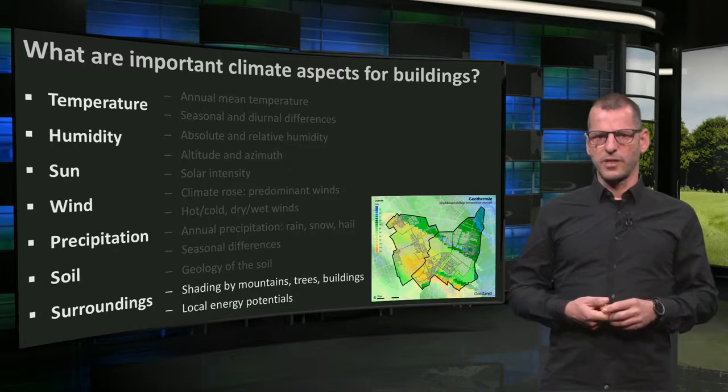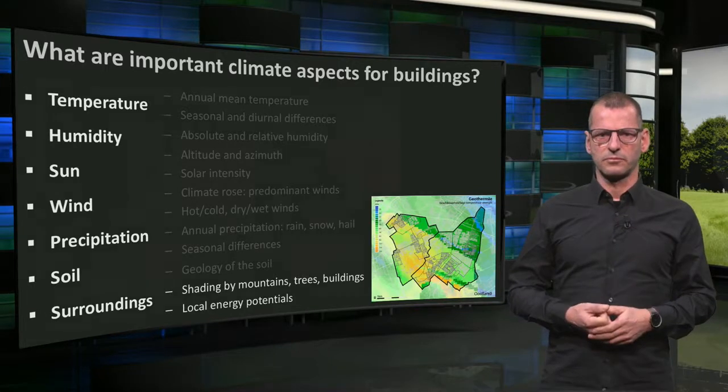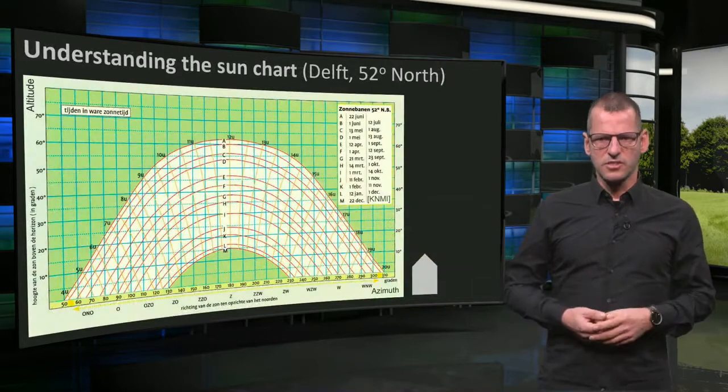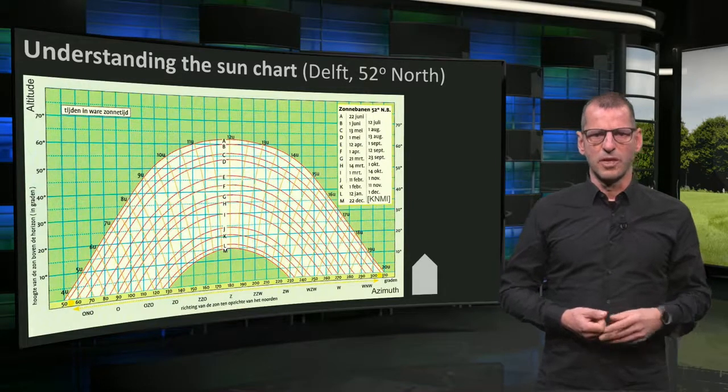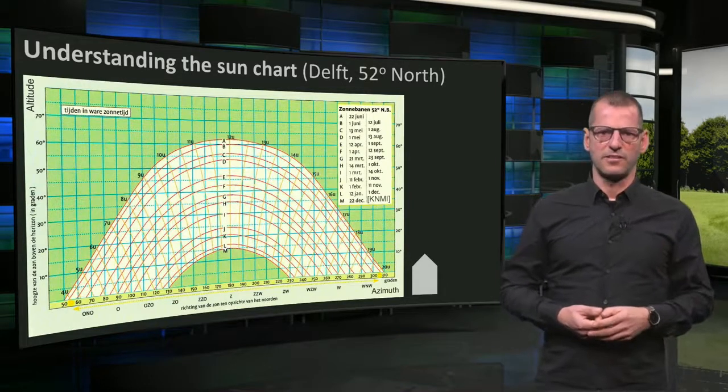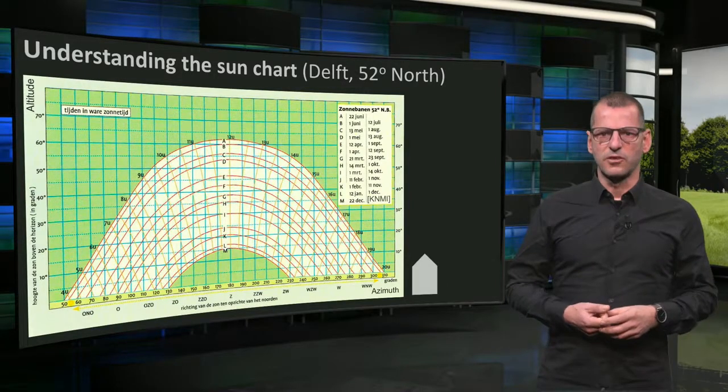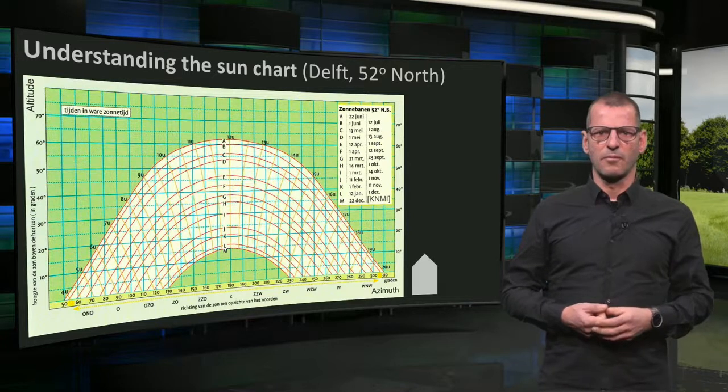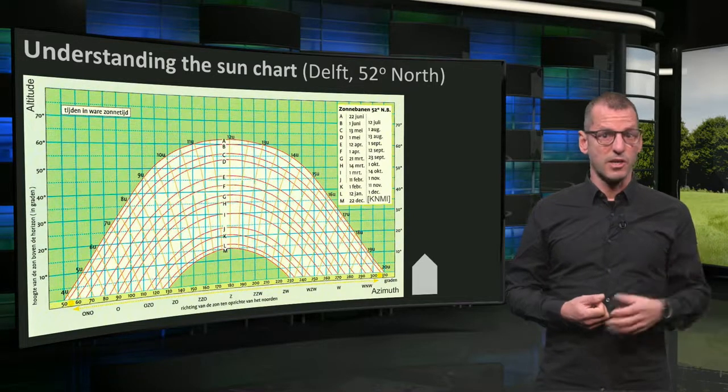We cannot go into all these aspects, but let's have a look at the sun. This is the sun chart of Delft, my city, at 52 degrees northern latitude. Every place on earth has a different sun chart. I will explain this particular chart step by step.